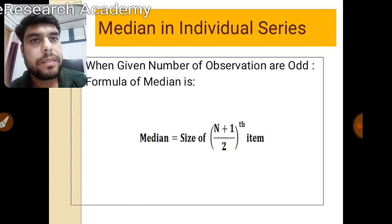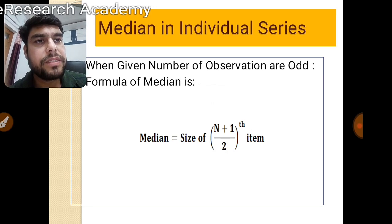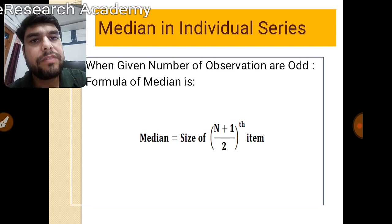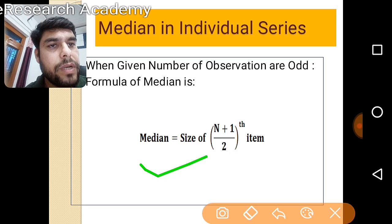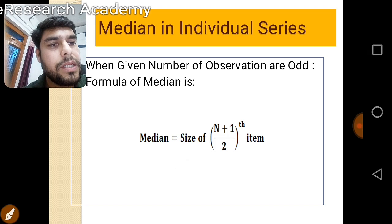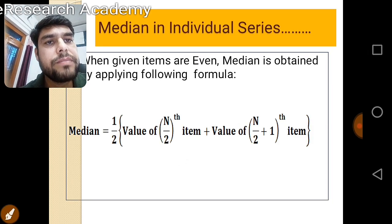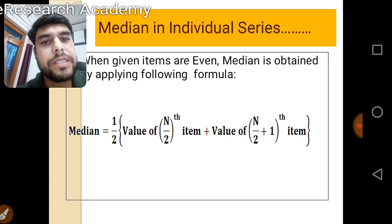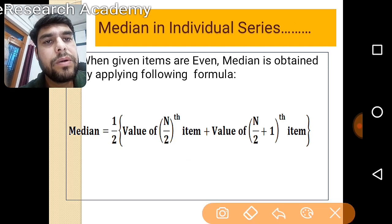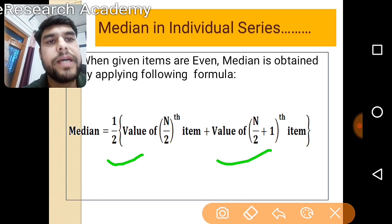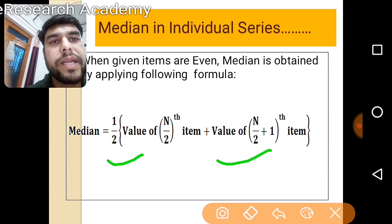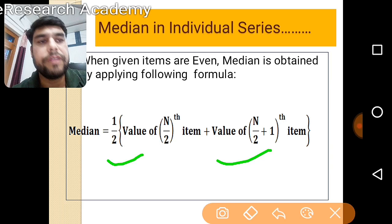In individual series, when the given observations are odd, the formula for median becomes: Median = size of (N+1)/2 th item. We apply this formula in case of odd items. In case of even items, the formula changes to: Median = (1/2) × [value of (N/2)th item + value of (N/2 + 1)th item].